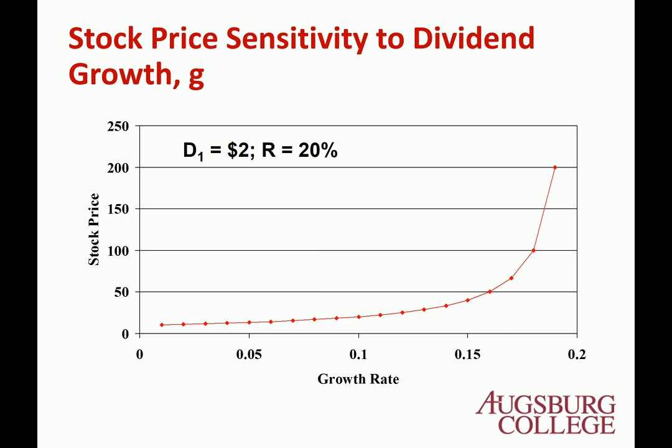This shows stock price sensitivity to the dividend growth rate. If the firm grows more, the price is higher — intuitively correct, since you'd pay more for a stock with higher growth potential. At R = 20%, if the growth rate exceeds 20%, the model breaks down because the denominator becomes negative and there's no negative price. In practice, the required rate of return typically exceeds the growth rate, so the model is broadly applicable.